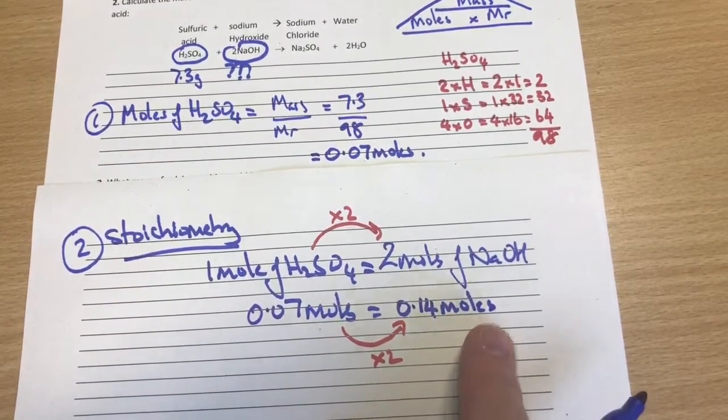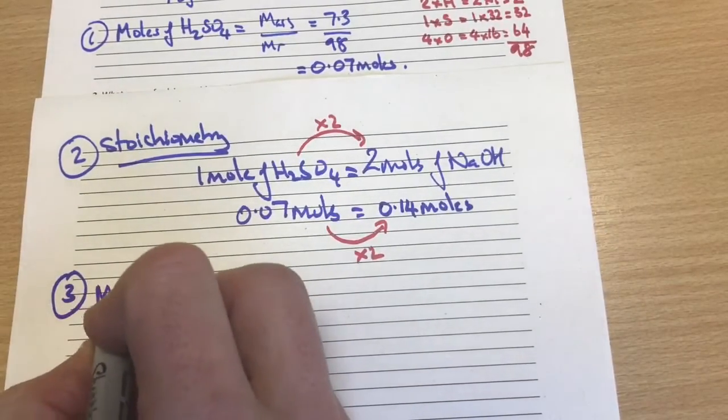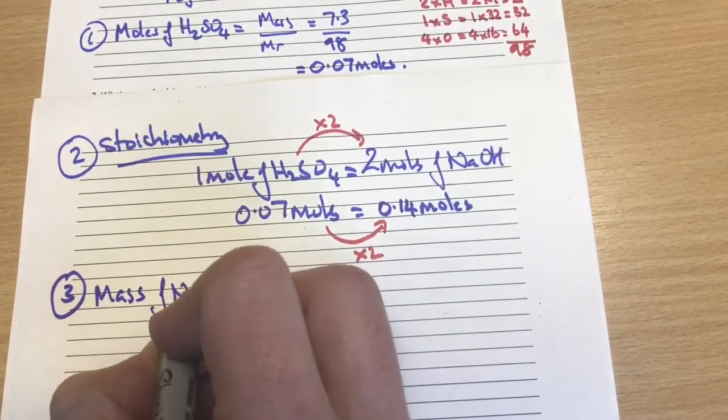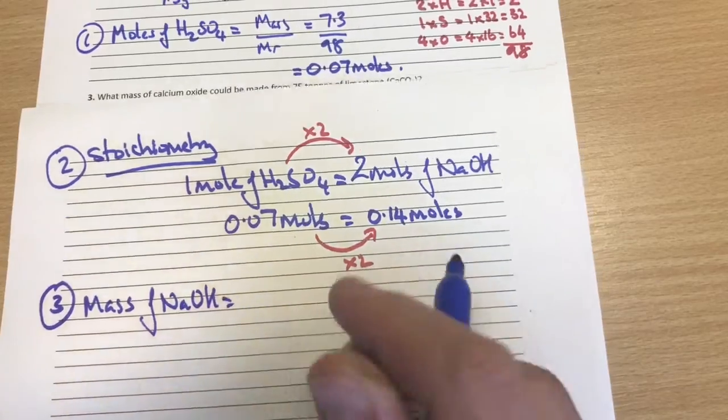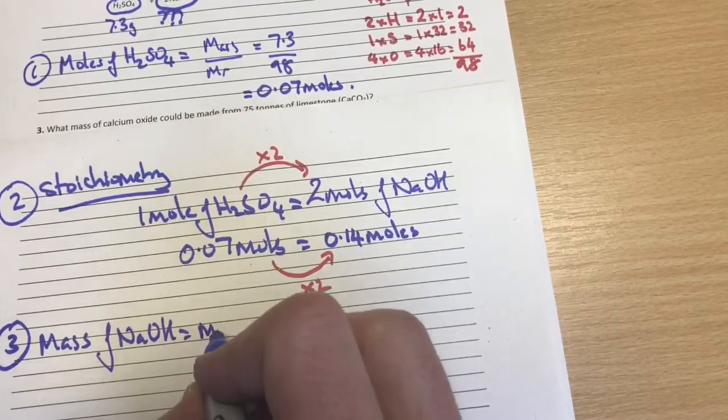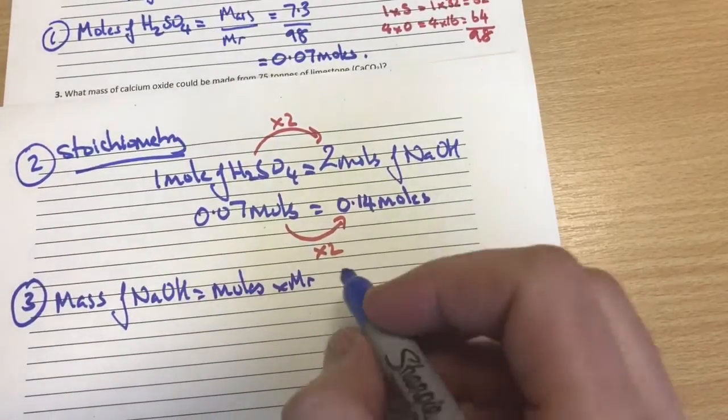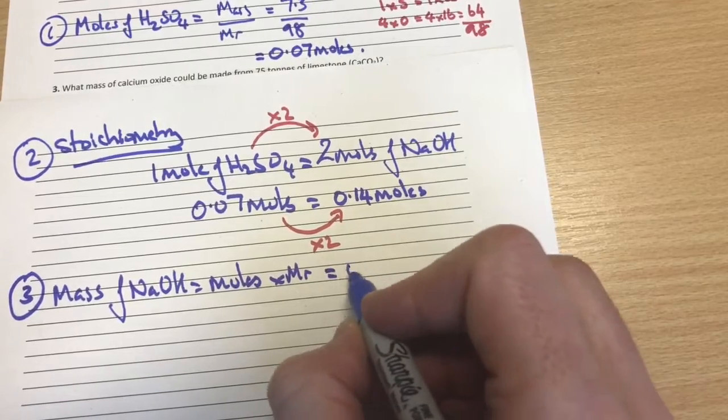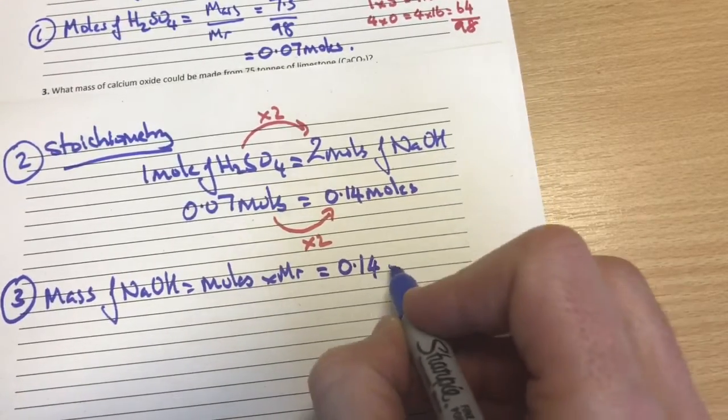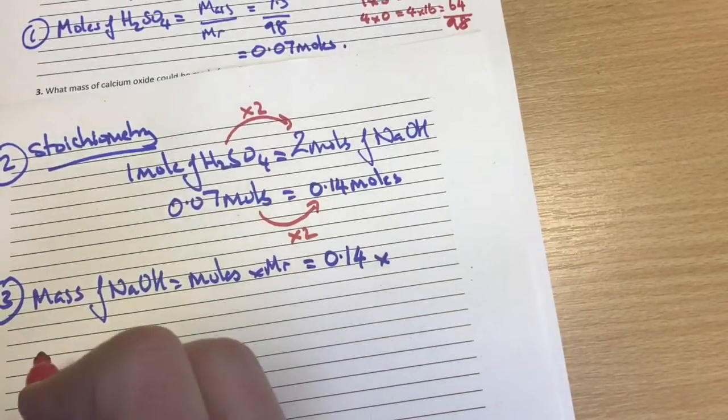The question asks us to work out a mass of that. So step three. Step three down here. Now we need to know the mass of the NaOH. And if we go back up to our triangle, cover mass over. Mass is the moles times by the relative formula mass. So the moles in here we've just worked out is 0.14. The relative formula mass, again, we need a little bit of working out. So I'm going to do that down here.